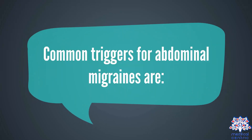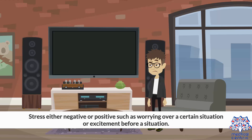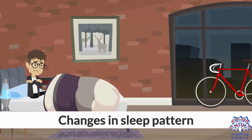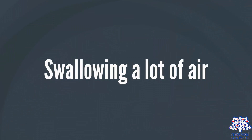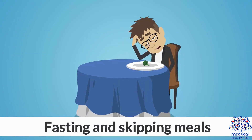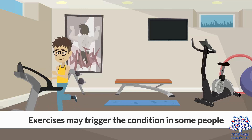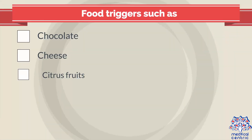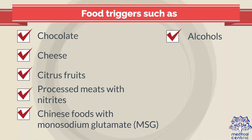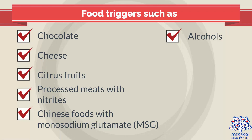Common triggers for abdominal migraines are: stress, either negative or positive, such as worrying over a certain situation or excitement before a situation; changes in sleep pattern; swallowing a lot of air; fasting and skipping meals; exercise, which may trigger the condition in some people. Food triggers include chocolate, cheese, citrus fruits, processed meats with nitrites, Chinese foods with monosodium glutamate or MSG, and alcohols.